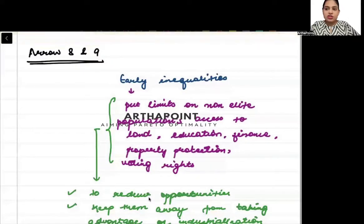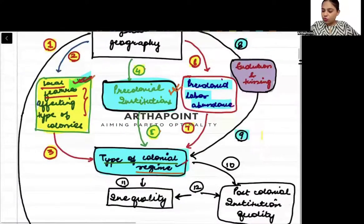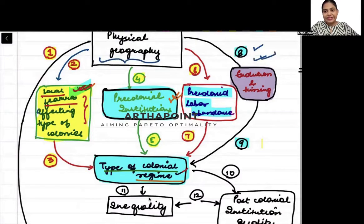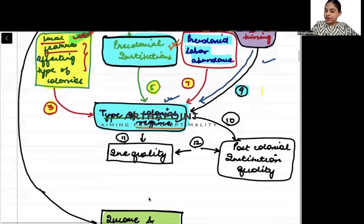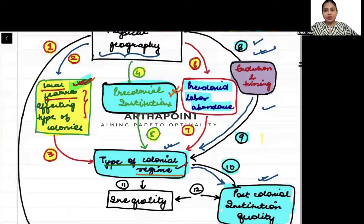Let's now try to understand the next few arrows of the same diagram. It's a very big diagram, so I'm going to go a little slow with this. Now I want to talk about arrow 8, which covers physical geography affecting the evolution and timing of colonies, which affects the type of colonies, which affects the post-colonial institution quality. I want to talk about arrows 8, 9, and 10 in this lecture.